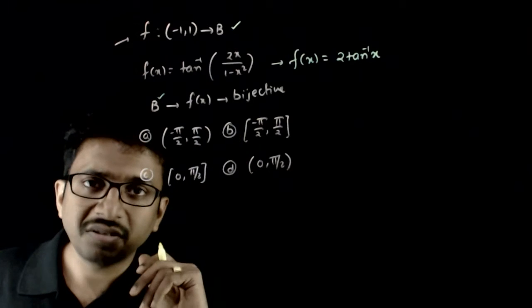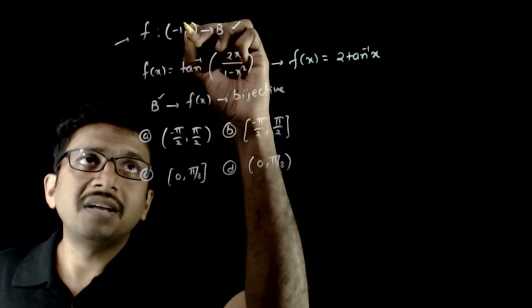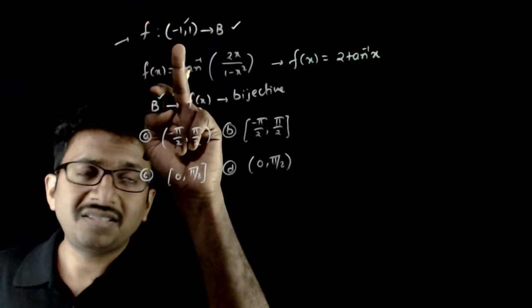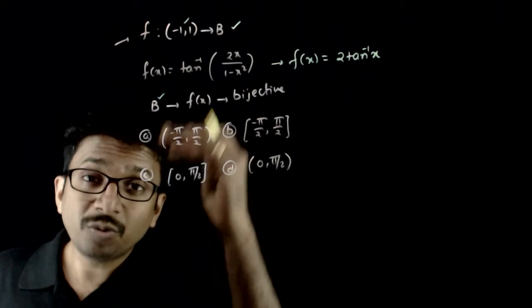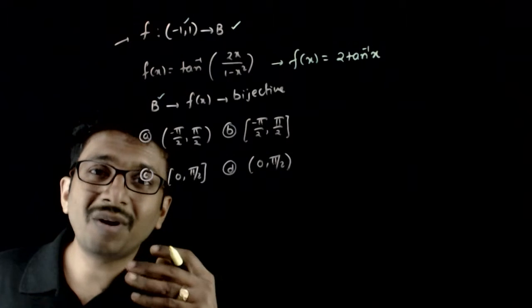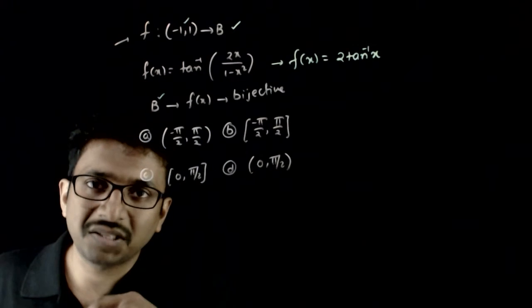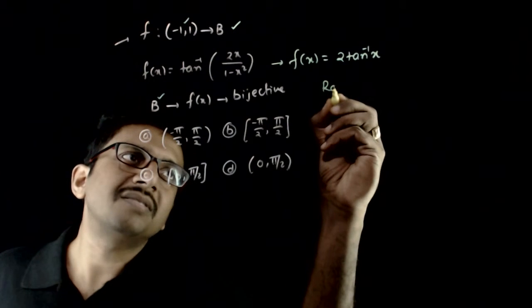Now in this function, as you can see, the domain is taken as minus 1 to 1. For this to become a bijection, what should be the codomain? The codomain should be same as the range of this function. So what is the range of this?